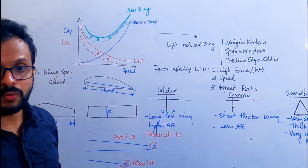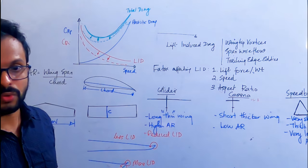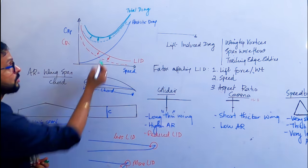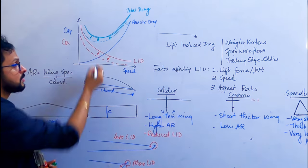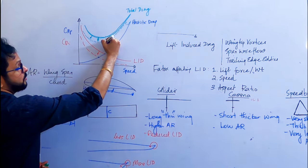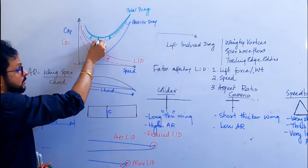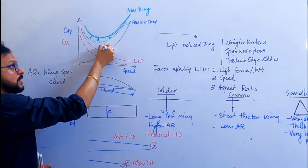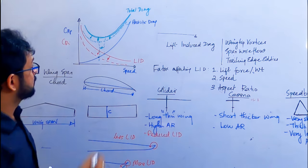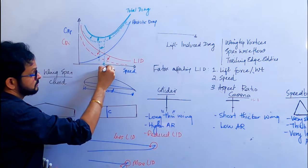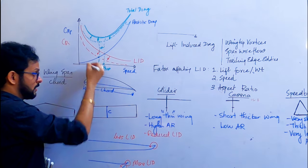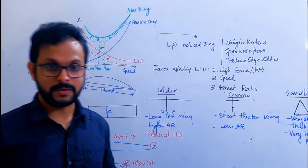The minimum drag is at the intersection of lift-induced drag and parasitic drag. Earlier it was at one point; now with increased aspect ratio it has shifted to the left. So the Vmd — the minimum drag speed — which was initially at a higher speed has now shifted to the left, giving a lower minimum drag speed.